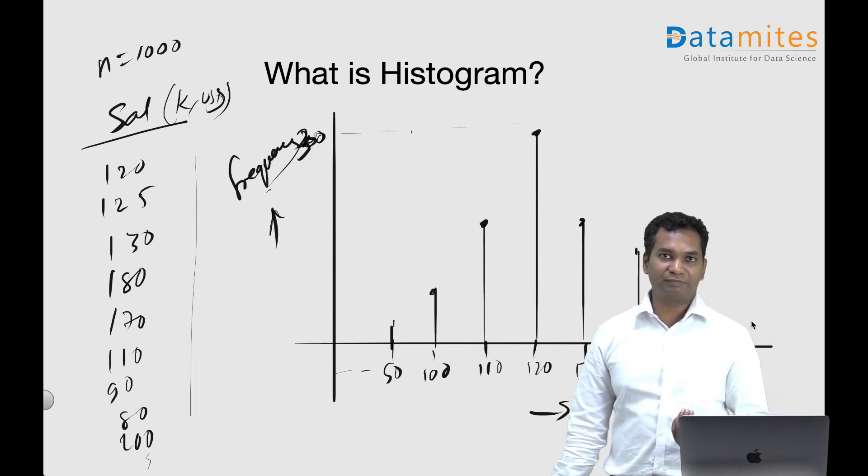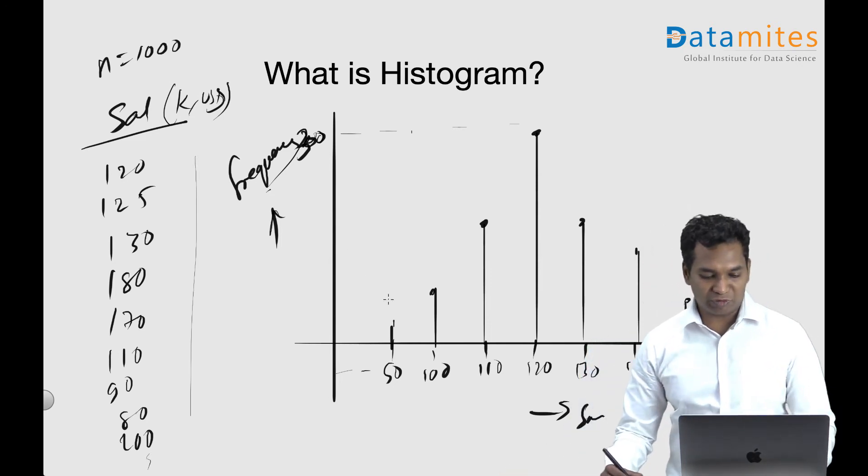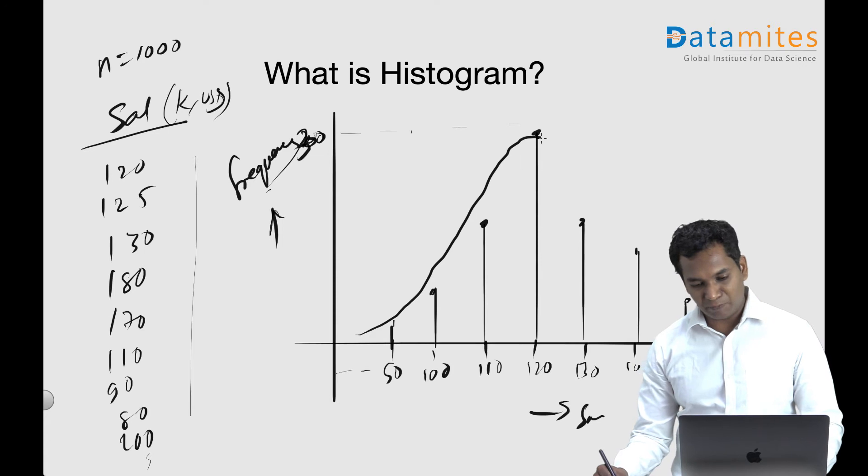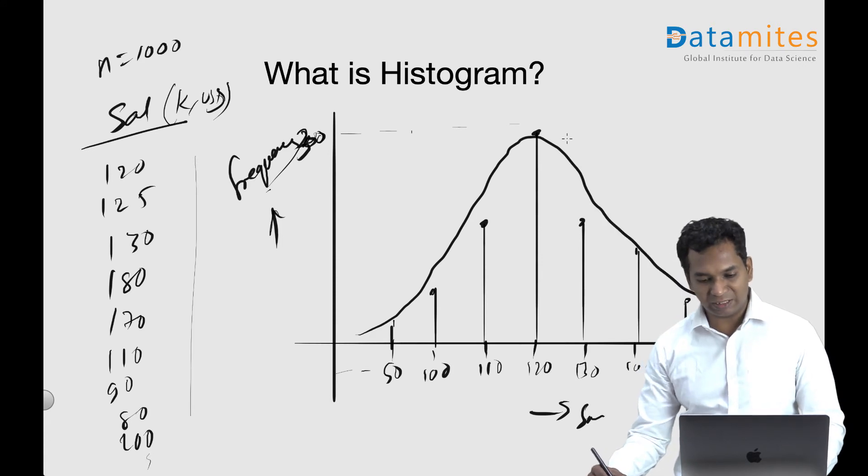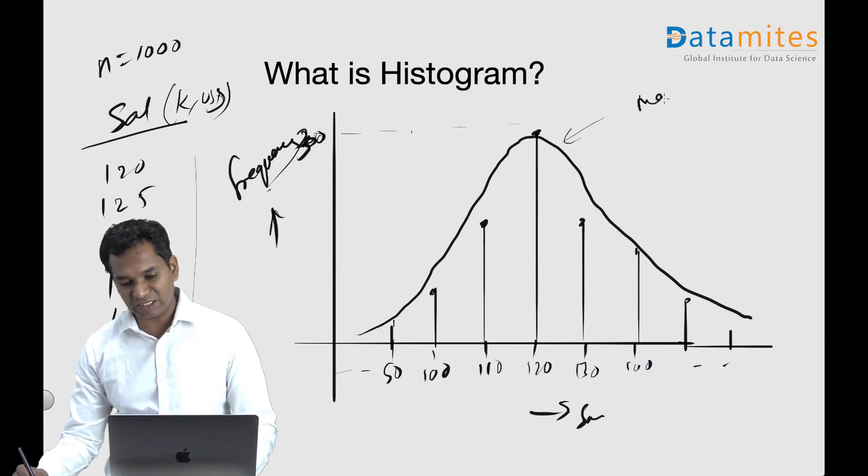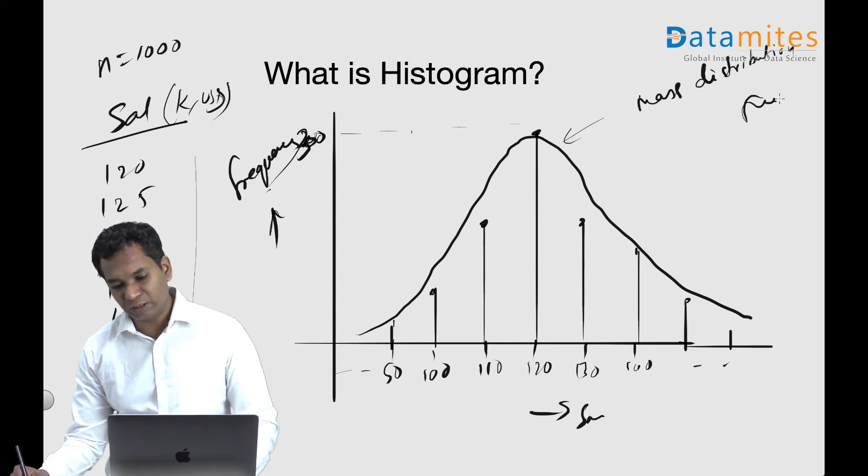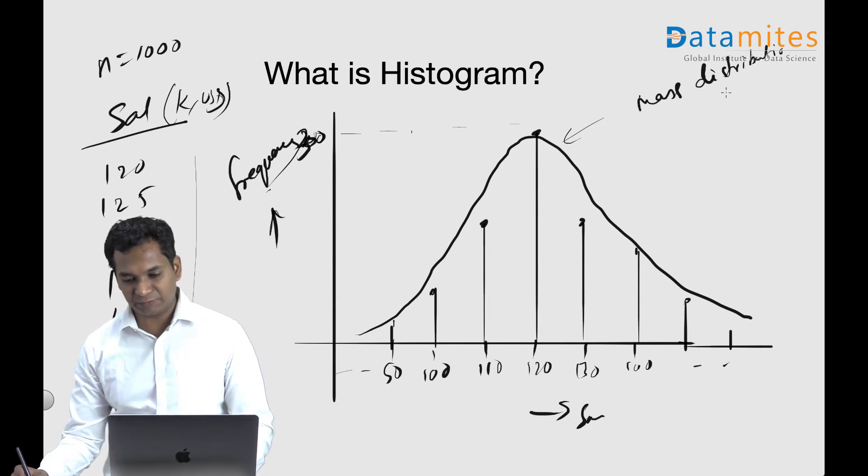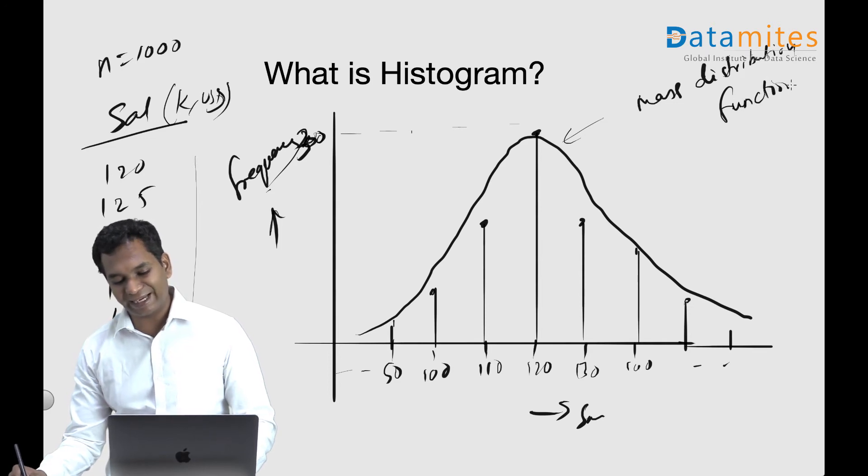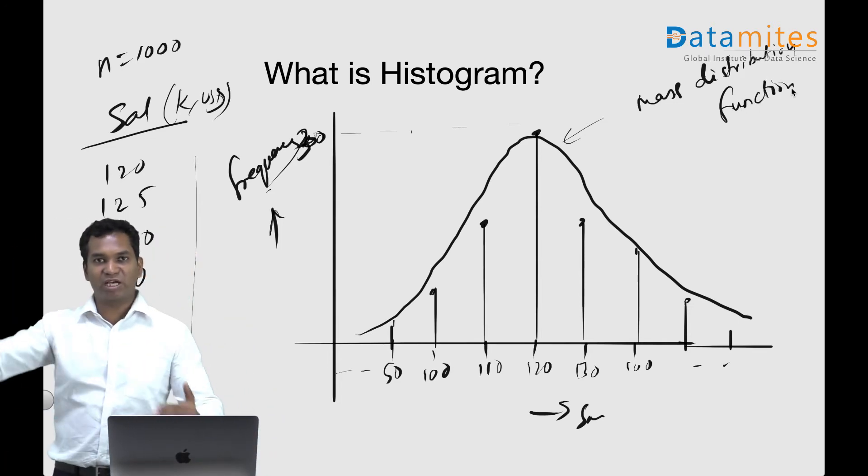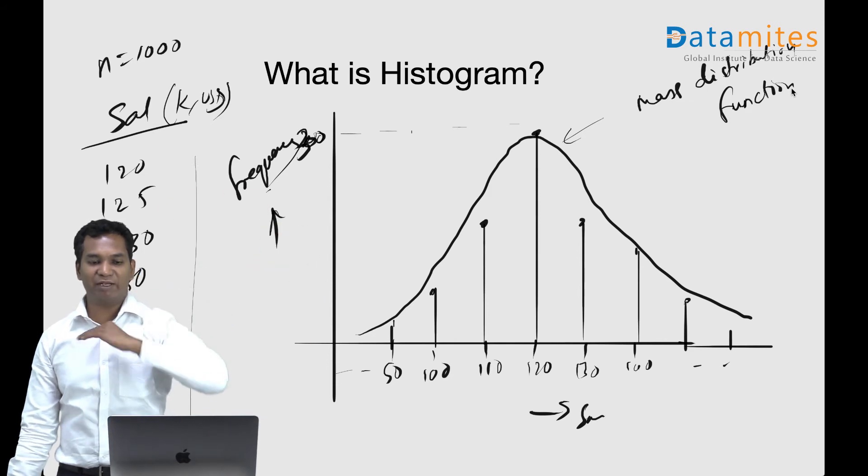And if you try to combine and make it smoother, this curve is called a mass distribution function. What it does is it takes an average, smooths the discrete values into continuous values.